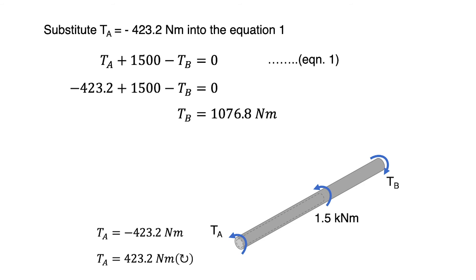Look at the first free body diagram. The rotation of TA is counterclockwise and TB rotates clockwise. The negative value of TA represents actual TA rotates in opposite direction. We can change the value of TA to positive 423.2 Nm and put the rotation as clockwise. For TB, since the value of TB is positive, then the rotation of TB is clockwise.